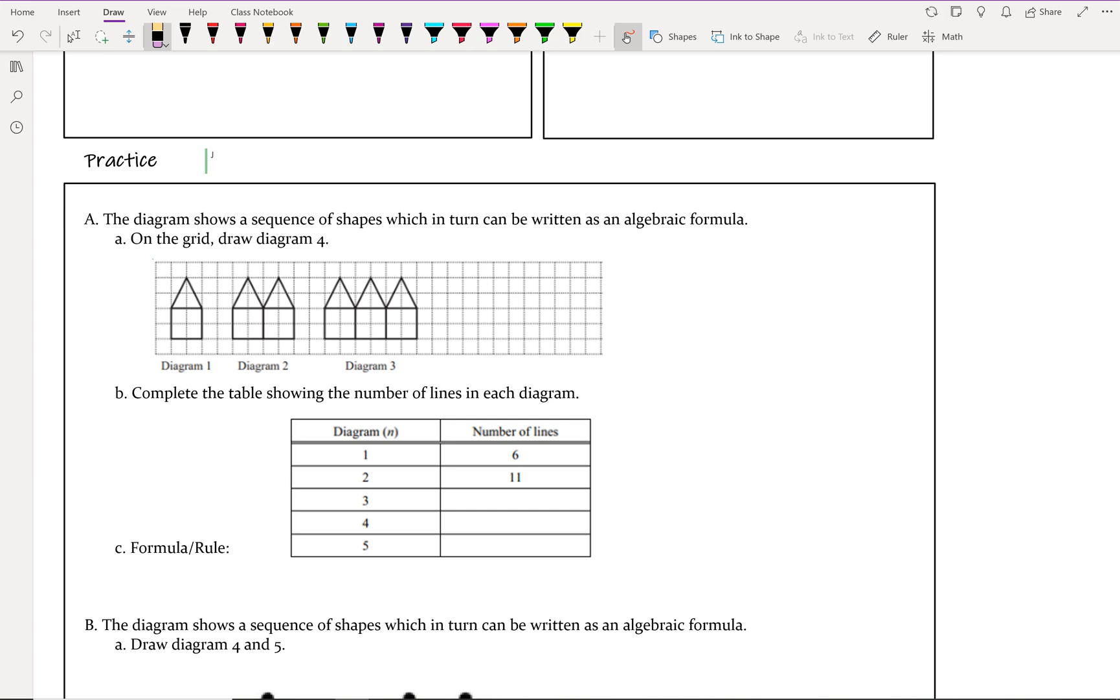To me, it looks like each time we're adding another set of the triangle shapes. So what we would do is I would draw one triangle, two triangles, three triangles, four triangles.